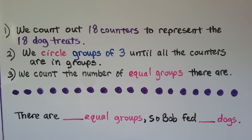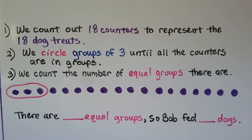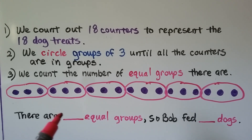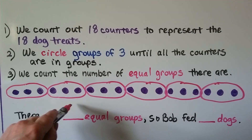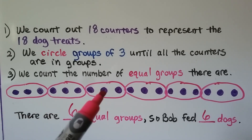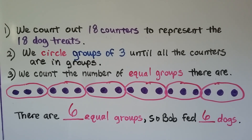We circle groups of three until all the counters are in groups — that's one group of three, two, three, four, five, six equal groups of three. There are six equal groups. So Bob fed six dogs. We can imagine that each circle is a dog and there are six of them — they each get three treats. They're equal groups.